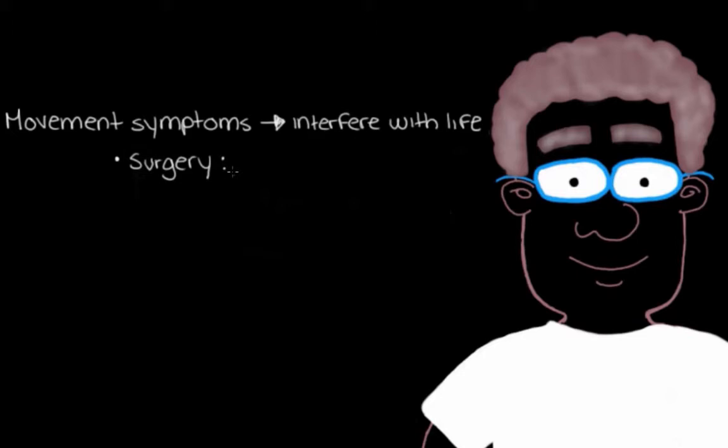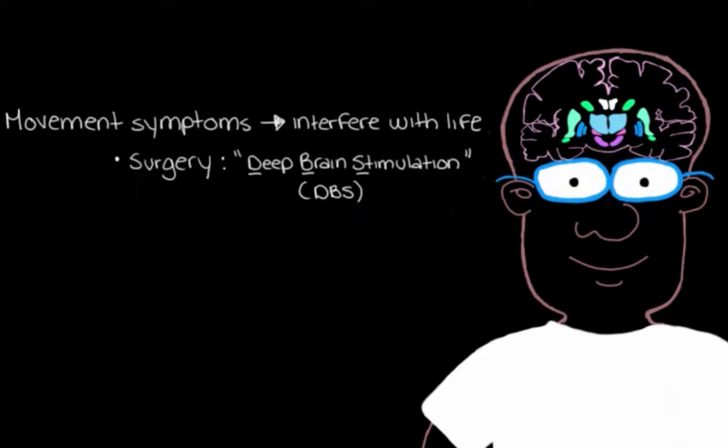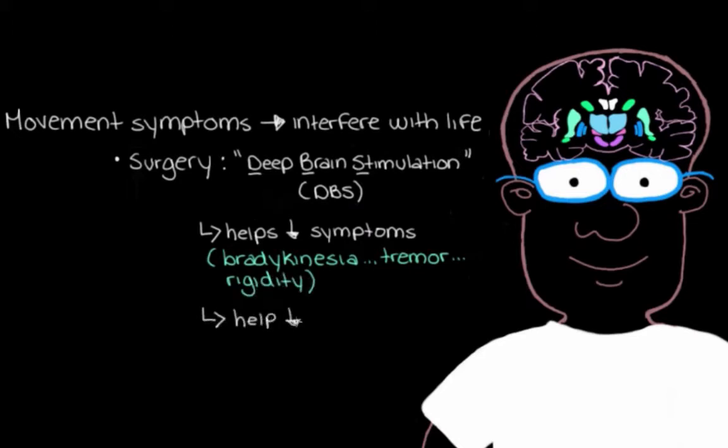The particular operation that's often useful in Parkinson's disease is called deep brain stimulation, or DBS. DBS is actually really interesting - it's kind of like a pacemaker for your heart, but instead of being for your heart, DBS is like a pacemaker for your brain. It helps to reduce the movement symptoms of Parkinson's disease - the bradykinesia, tremor, and rigidity - and it can also help with dyskinesia from long-term L-DOPA use.